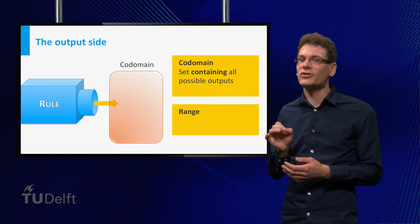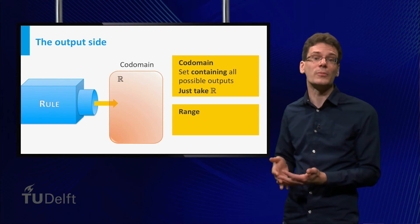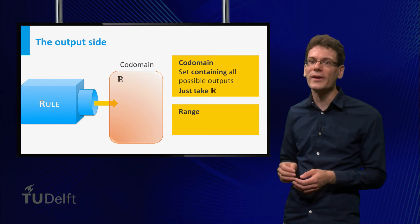Since every function that we consider produces real numbers, we can just take the set of all real numbers as a codomain. From now on, we will always make this choice.